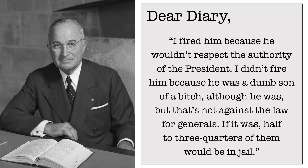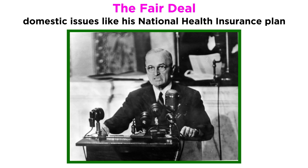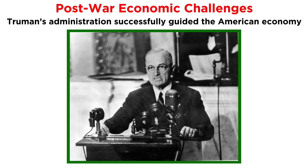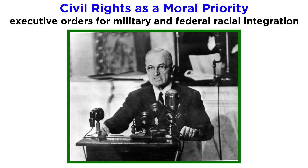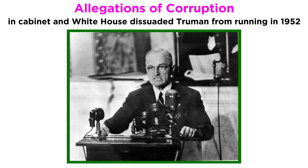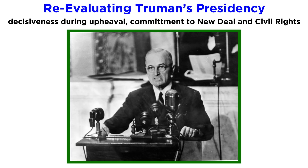On domestic issues, Truman's Fair Deal programs, such as a national health insurance plan, faced opposition from a Congress dominated by Republicans and conservative Southern Democrats, who also opposed Truman's civil rights policies. However, his administration was able to successfully guide the American economy through the postwar economic challenges. Truman maintained that civil rights were a moral priority, and in 1948 he submitted the first comprehensive civil rights legislation, also issuing executive orders to start racial integration in the military and federal agencies. Allegations of corruption by certain cabinet members and senior White House staff became a central campaign issue in the 1952 presidential election, and dissuaded the unpopular Truman from seeking another term. Yet not long after leaving office, historians began reevaluating Truman. He is often ranked in the top ten presidents, and scholars celebrate his decisiveness in times of great international upheaval, his dedication to continuing Roosevelt's New Deal, and his commitment to civil rights.